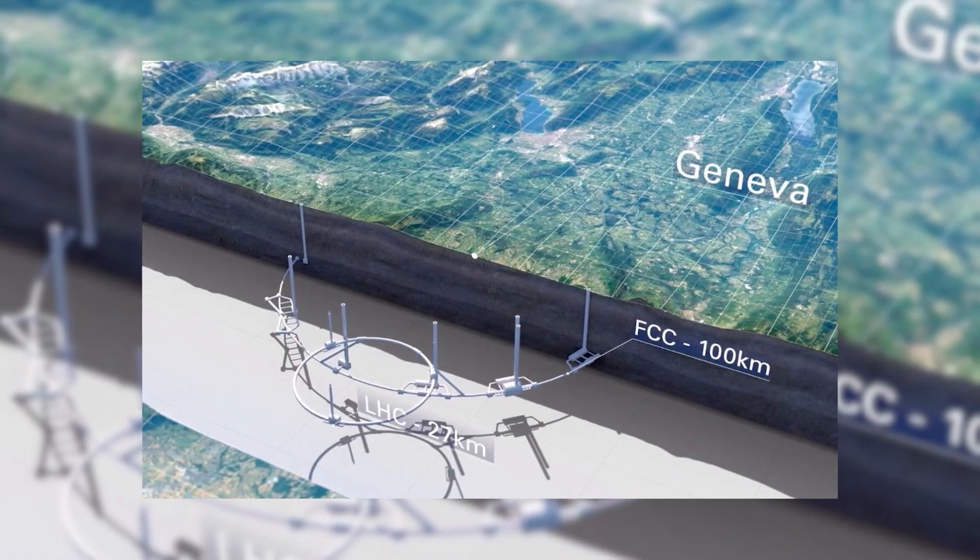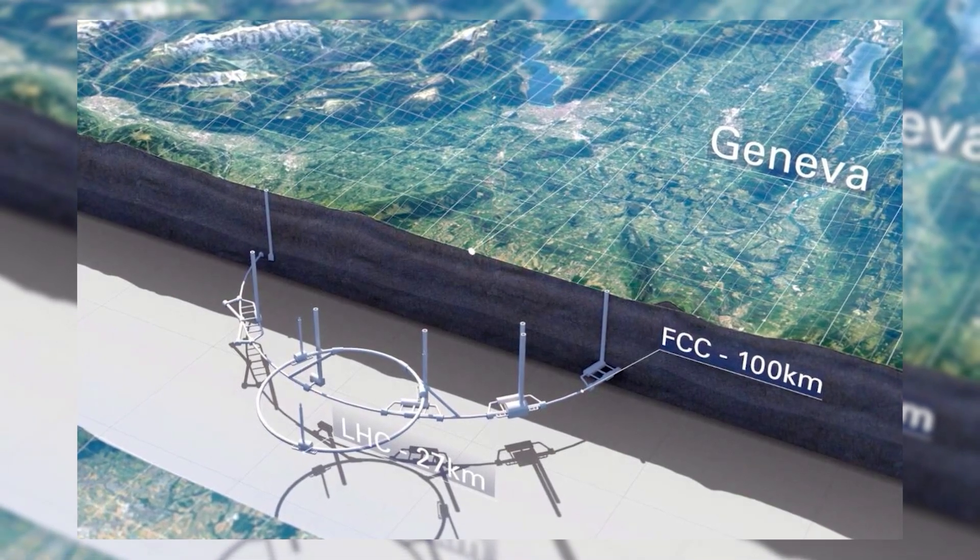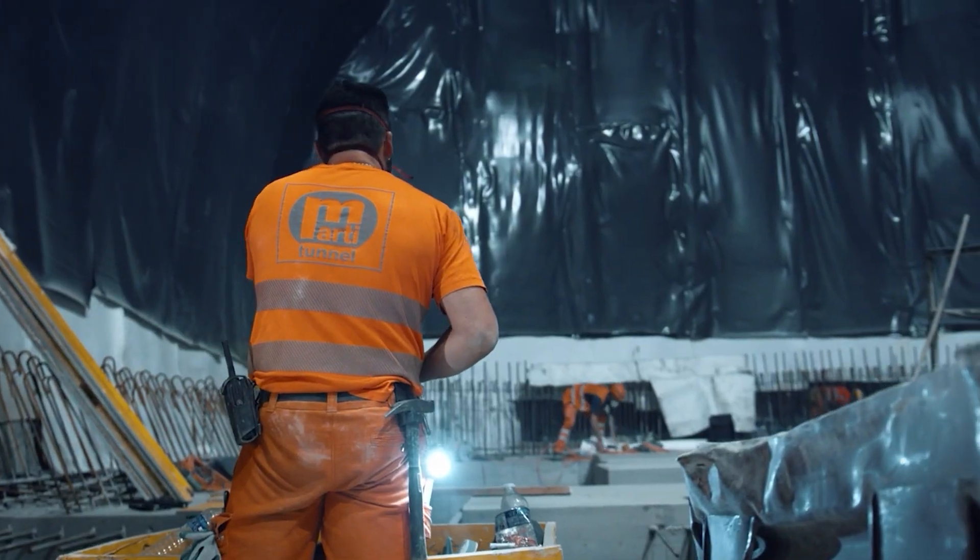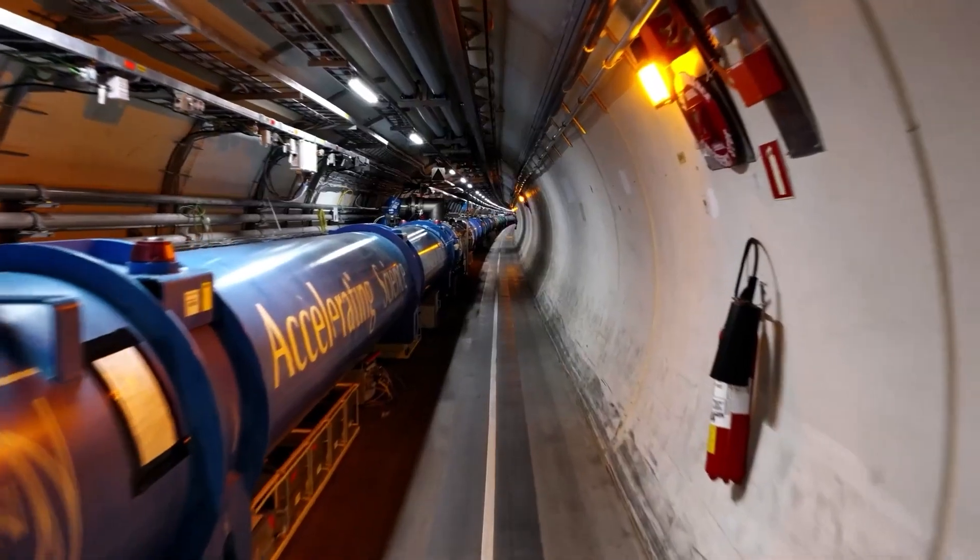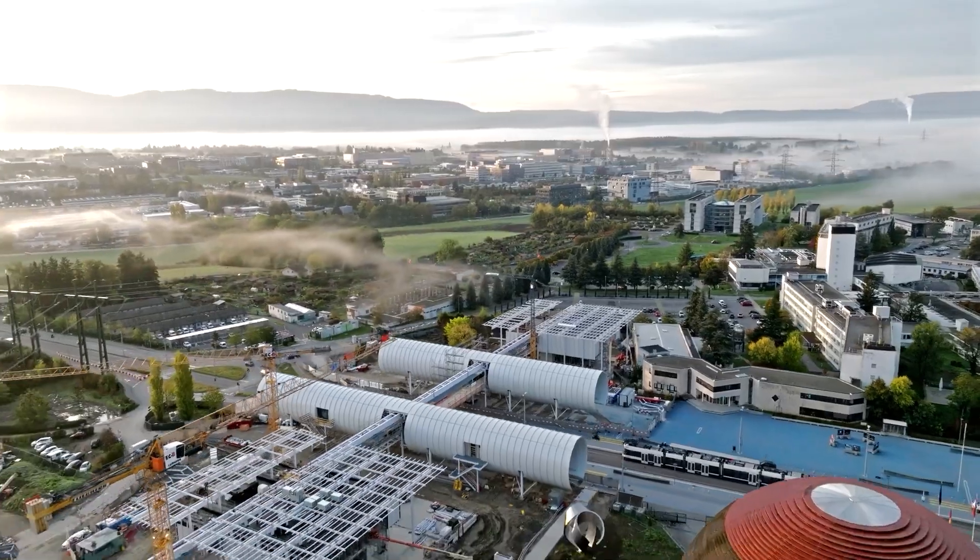The collider is in a round tunnel underground, varying from 50 to 175 meters deep. They put it underground so it's easier to build and so it doesn't mess up the land above. It's also better because the ground above the tunnel blocks some unwanted rays. The tunnel goes through France and Switzerland, but most of it is in France. The building above it has important machines to control everything.